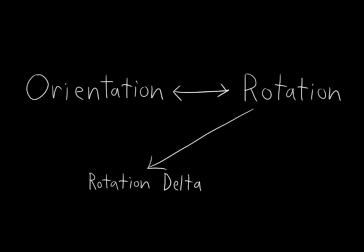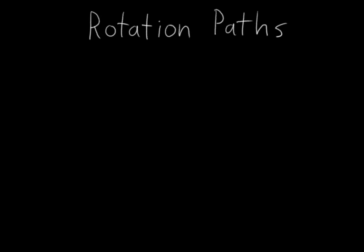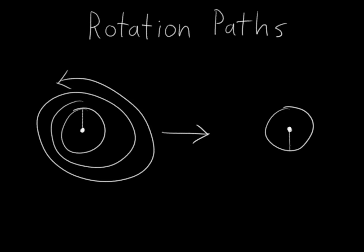The second kind of rotation is what I like to call a rotation path. With rotation paths, we care not only about the shift in orientation, but also about how it got there. We care what direction it spins, for example, and we care how many times it spins.